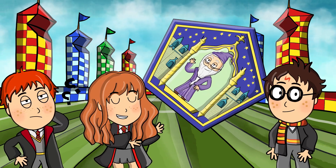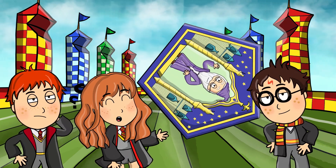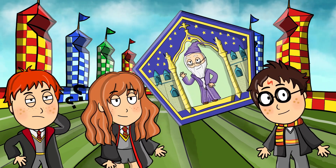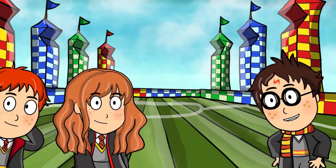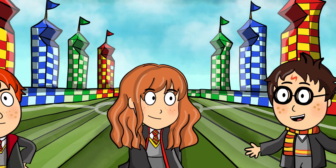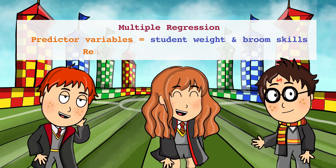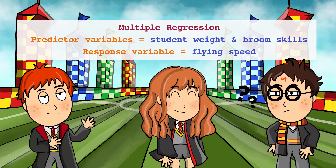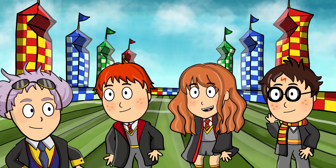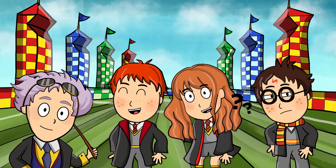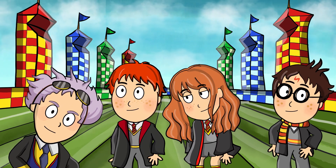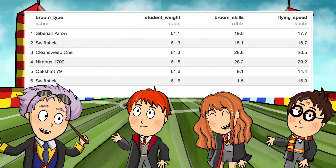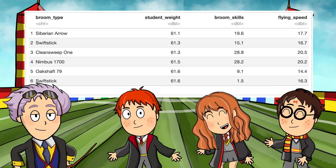Remember we talked about linear regression in the Chocolate Frog episode? Multiple regression is an extension of linear regression that looks at the relationship between two or more predictor variables. So the two predictor variables are student weight and broom skills, and the response or dependent variable is flying speed. Madam Hooch, I think you have the records for each term — can we use it to run a multiple regression model? Of course you can. Here's the data set. We have four columns: broom type, student weight, broom skills, and flying speed.